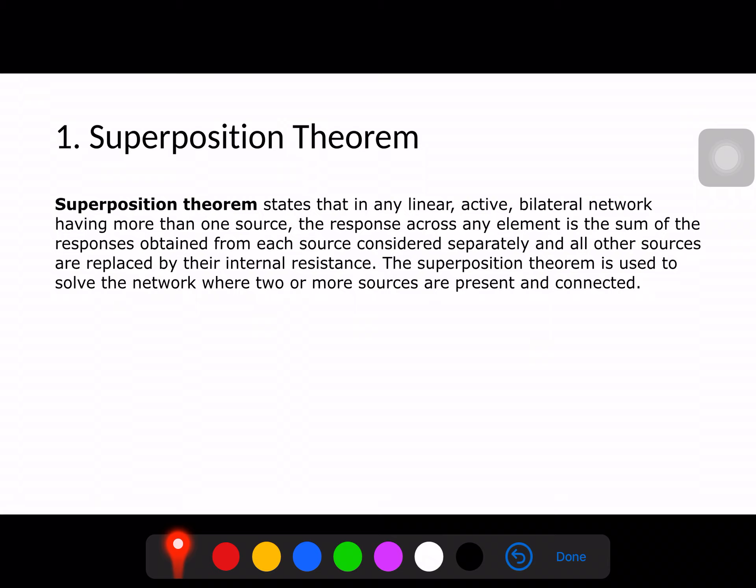So basically superposition theorem kya keh rahi hai? It says that if we have more than one source in a circuit, in a network, then we will consider one source at a time and measure the response across any element. Whichever source you consider, the other sources will be removed and replaced by their internal resistance. Similarly for all sources, we will find individual responses, and finally we will add all the responses to obtain the final response.